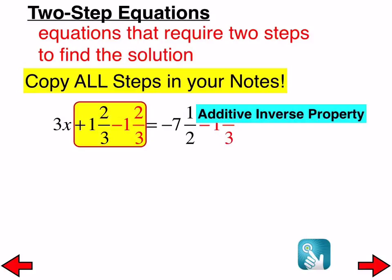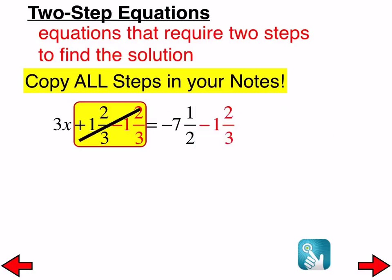We subtract 1 and 2 thirds from both sides — that is the inverse operation — and we've created 0 there like we want to. Now we have 3x left on the left-hand side and negative 9 and 1 sixth on the right-hand side. That negative 7 and 1 half minus 1 and 2 thirds you may have to work out off to the side. Note: if your notes are incorrect, just change them to match what's on the board.